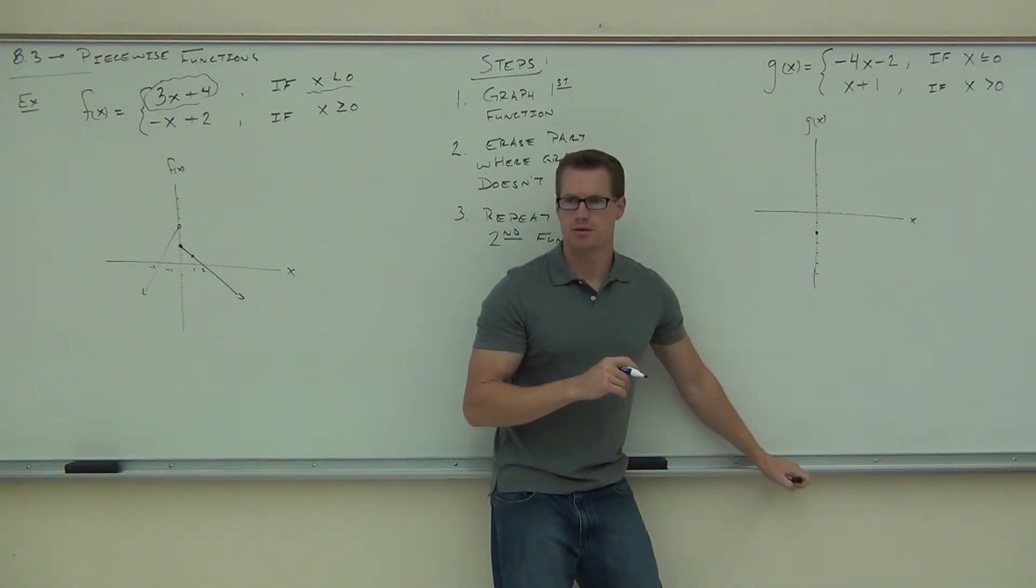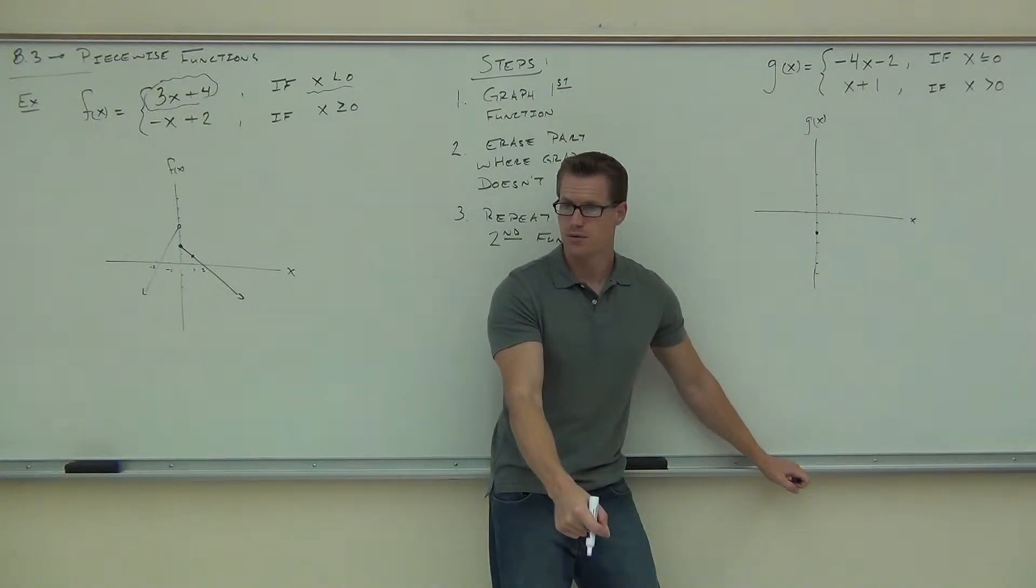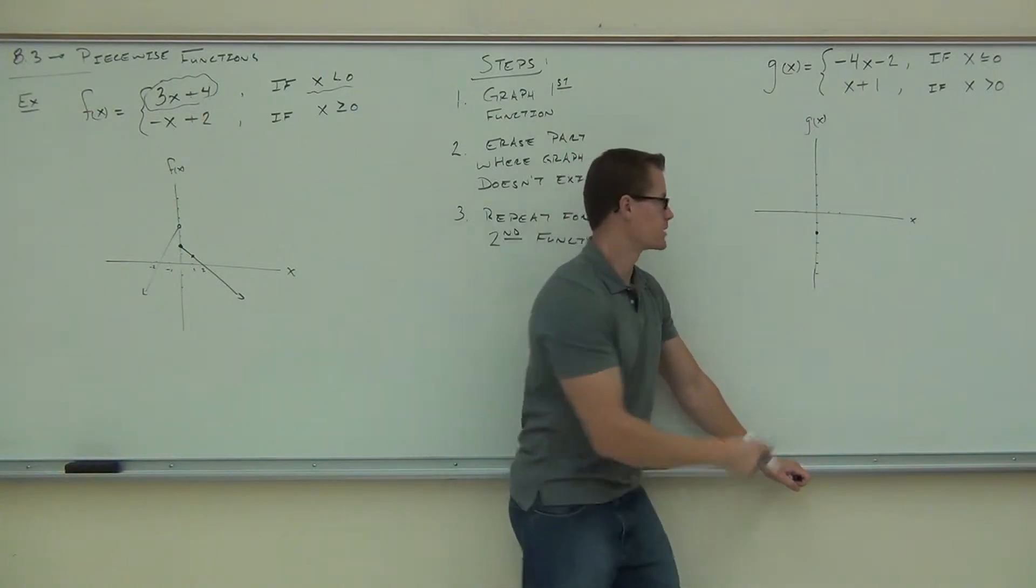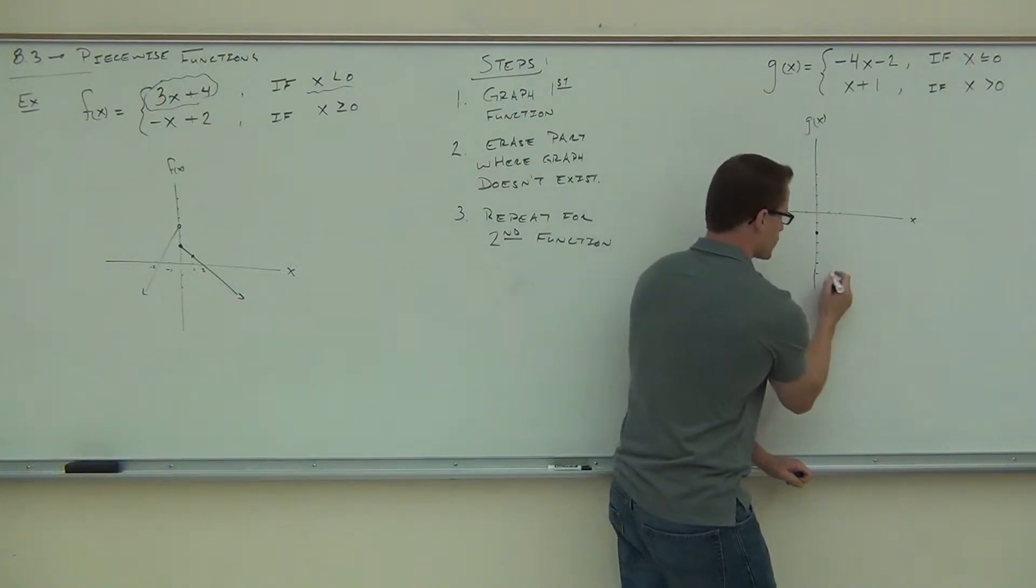What's your slope there? Negative 4. So that says I do what? Down. And then? Down 1. Okay, so 1, 2, 3, 4 over to the right 1.